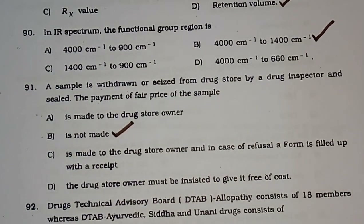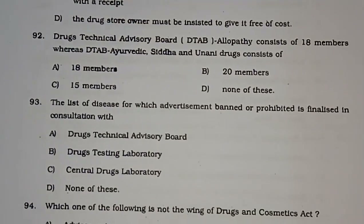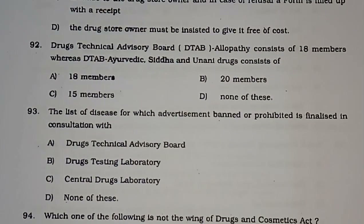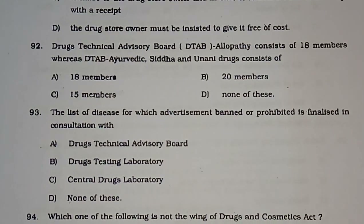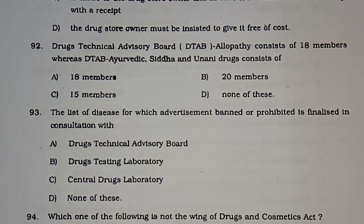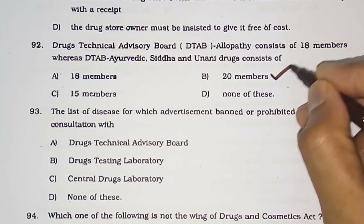Question number 92: Drug Technical Advisory Board (DTAB) for allopathy consists of 18 members, whereas DTAB for Ayurvedic, Siddha, and Unani drugs consists of — 18, 20, 15, or none of these. The correct answer is 20.